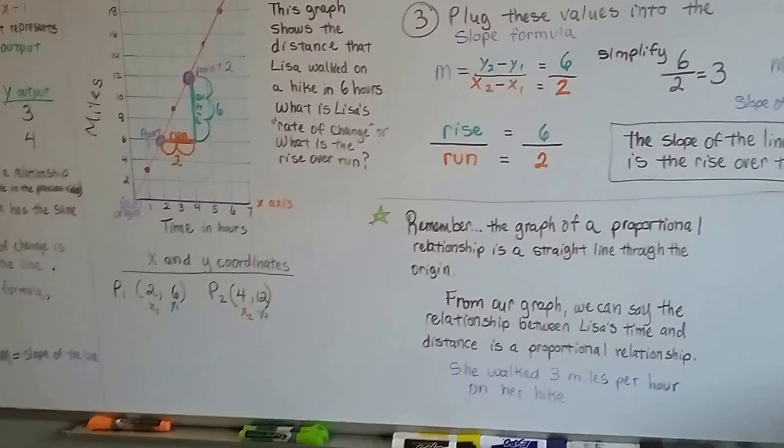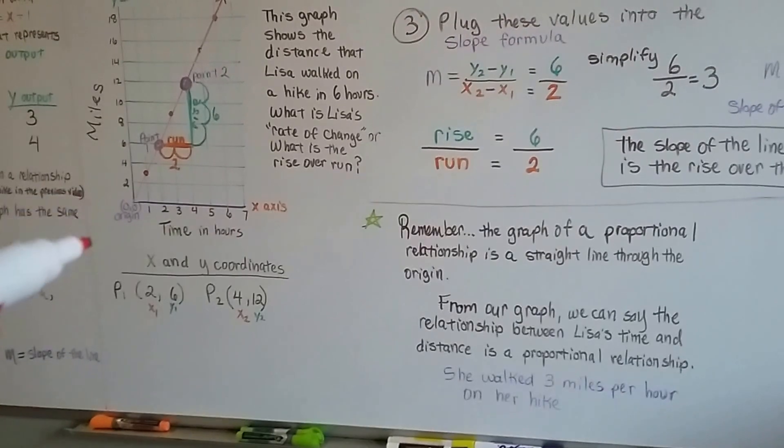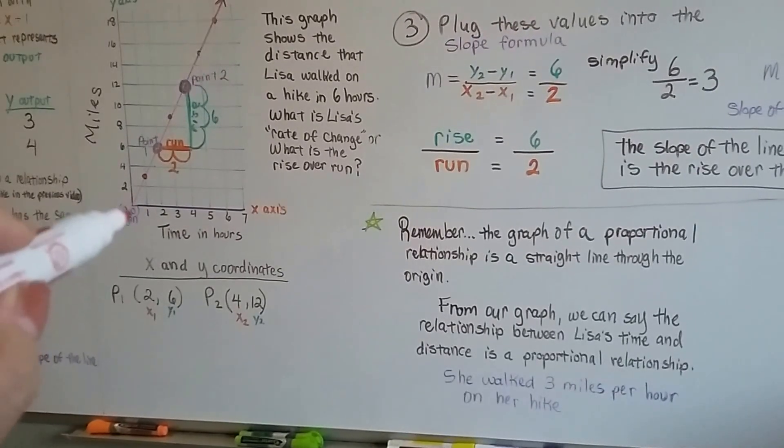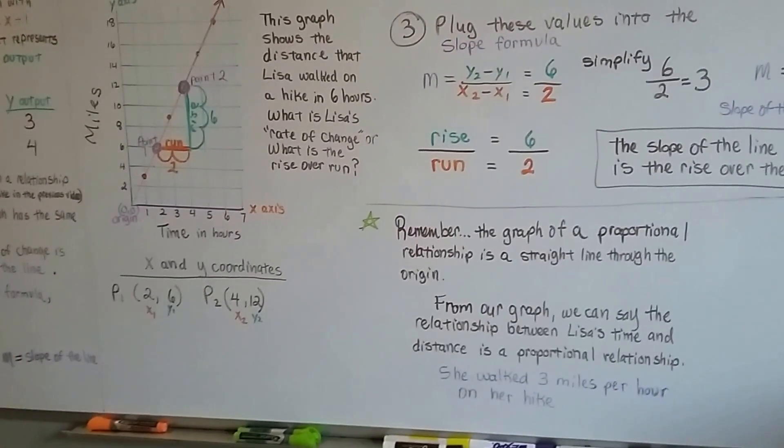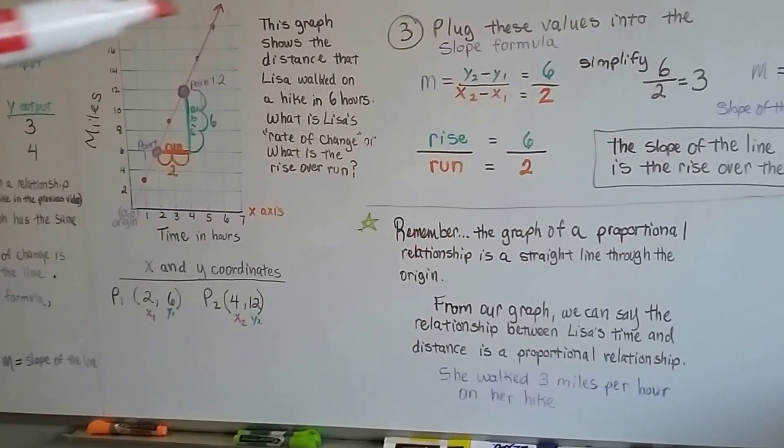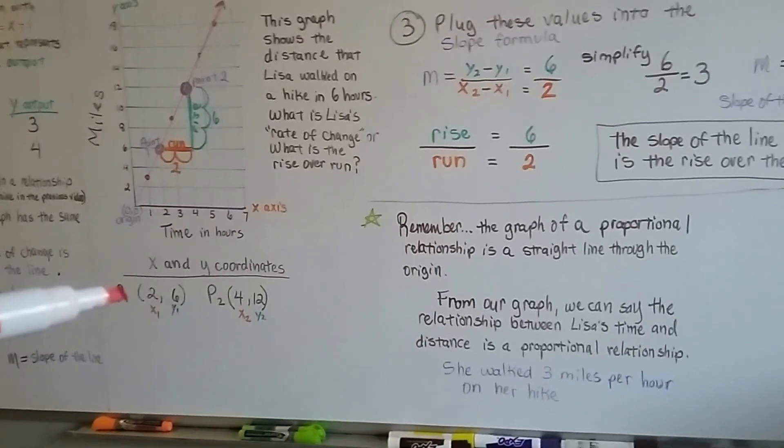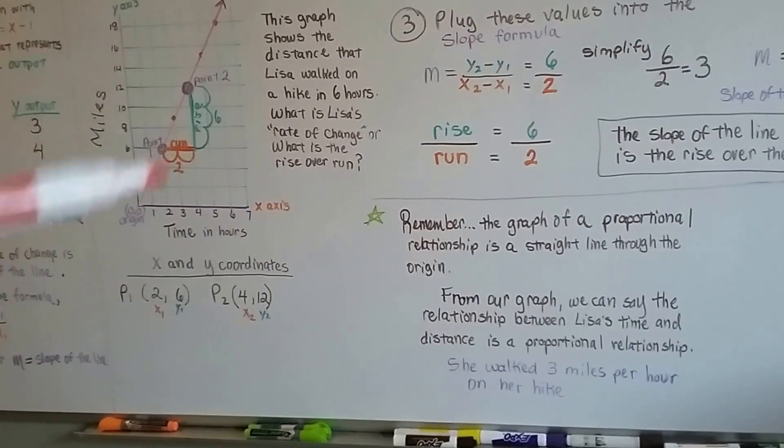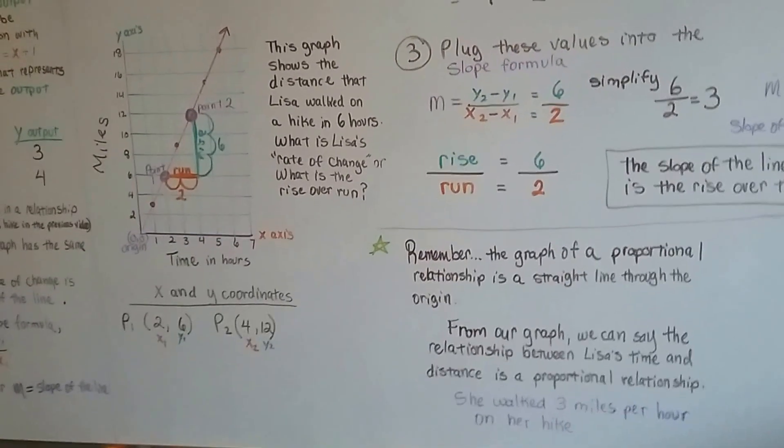Remember, the graph of a proportional relationship is a straight line through the origin. The origin's right here. And from our graph, we can say the relationship between Lisa's time and distance is a proportional relationship. She walked 3 miles per hour on her hike. We proved it with the rise over run.